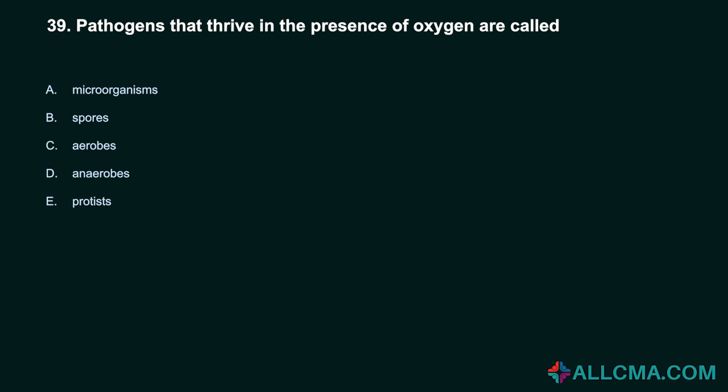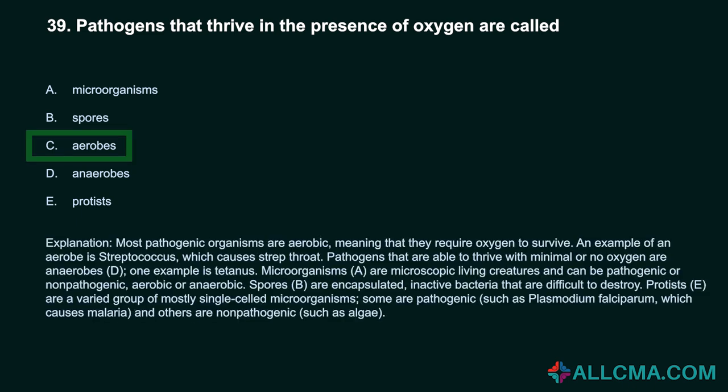Question 39: Pathogens that thrive in the presence of oxygen are called: a) microorganisms, b) spores, c) aerobes, d) anaerobes, e) protists. Correct answer: C, aerobes. Most pathogenic organisms are aerobic, meaning they require oxygen to survive. An example is streptococcus, which causes strep throat. Anaerobes thrive with minimal or no oxygen; an example is tetanus. Microorganisms are microscopic living creatures that can be pathogenic or non-pathogenic. Spores are encapsulated, inactive bacteria that are difficult to destroy. Protists are a varied group of mostly single-celled microorganisms; some are pathogenic, such as Plasmodium falciparum, which causes malaria.